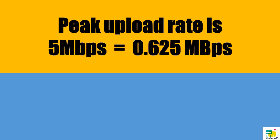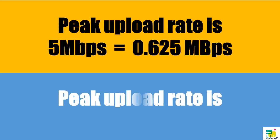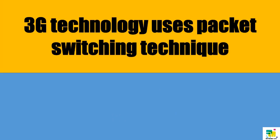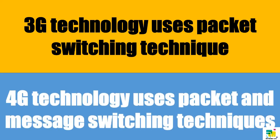In 3G technology, peak upload rate is 500 Mbps, which is equal to 62.5 MB/s. This is a technique for delivering packets from one port to another port. But 4G technology uses packet and message switching techniques for delivering packets.